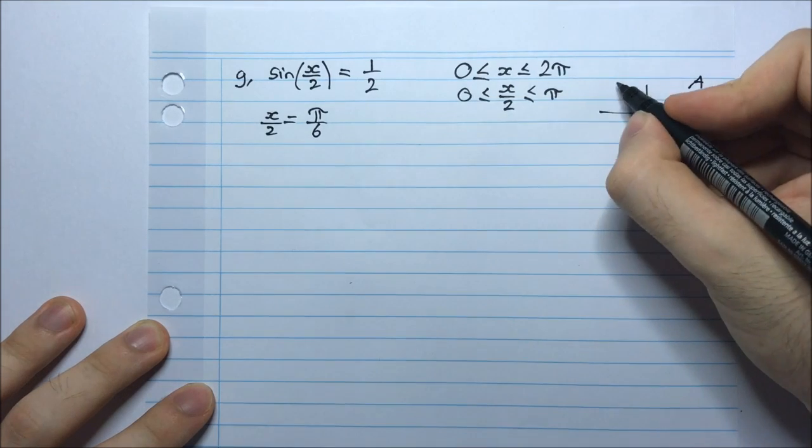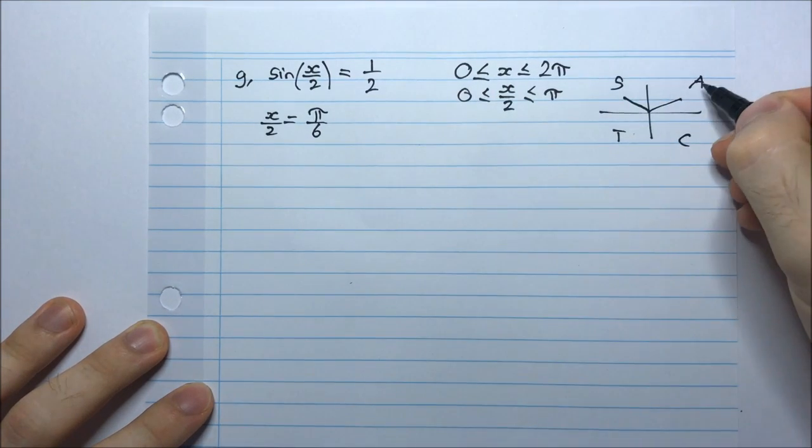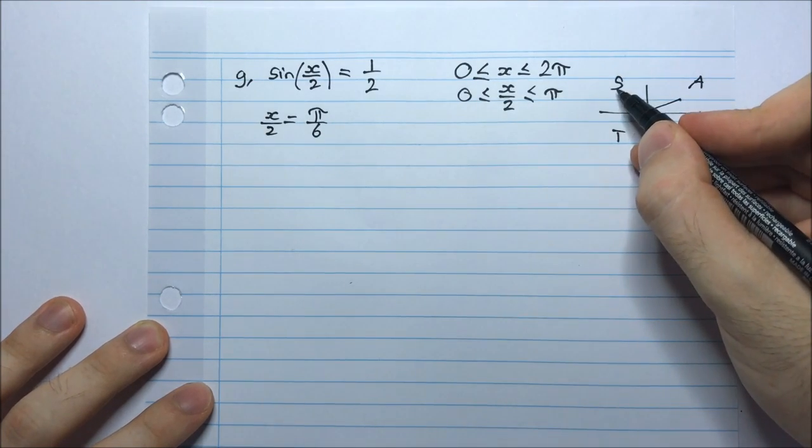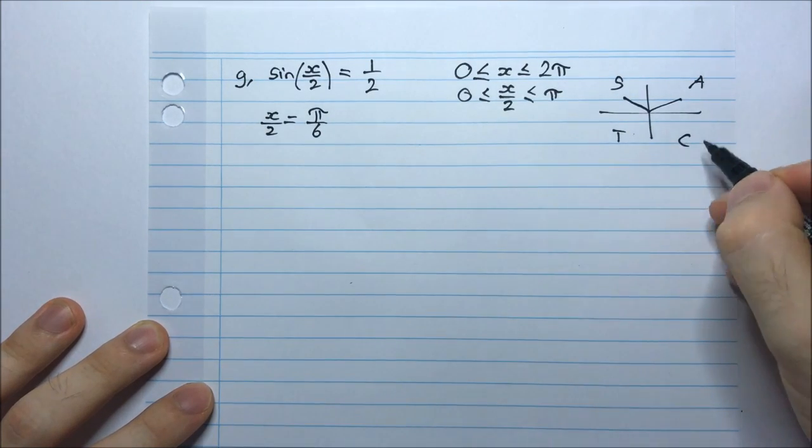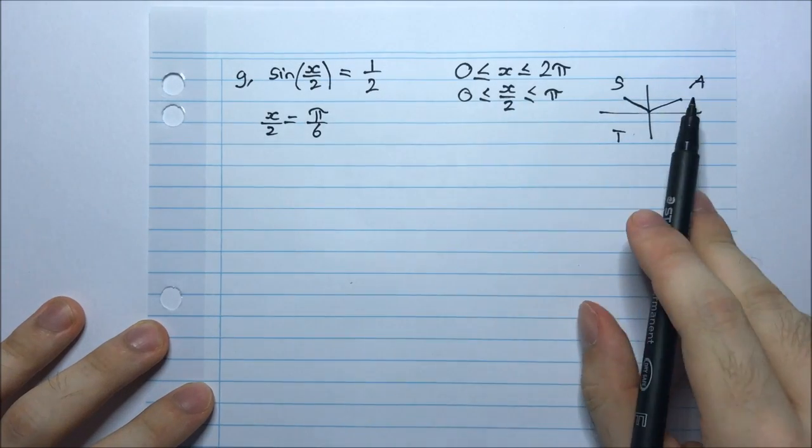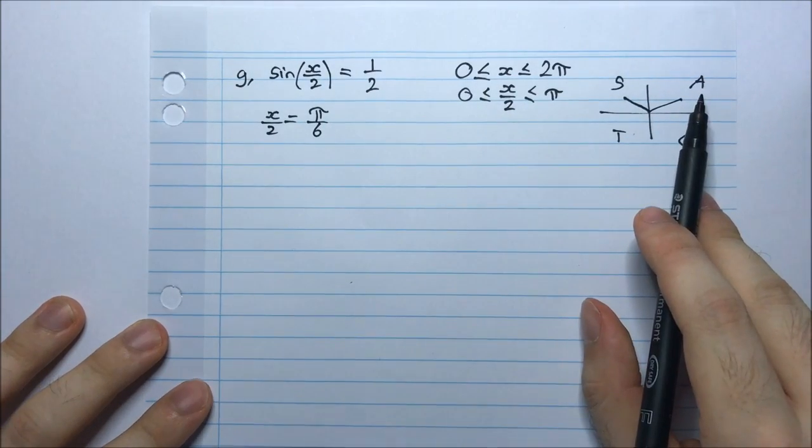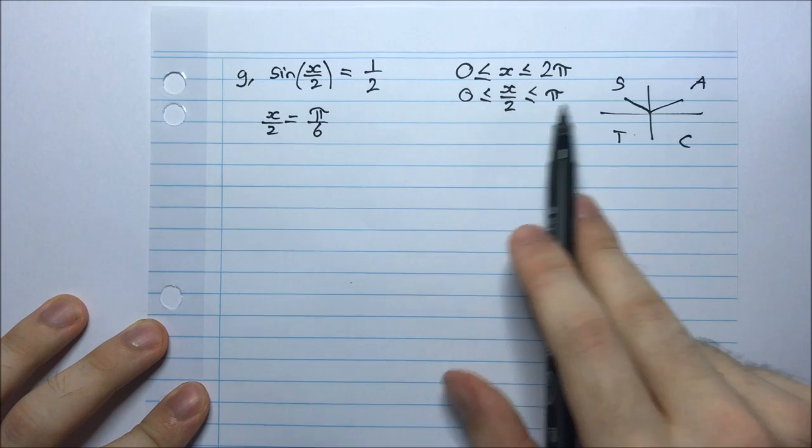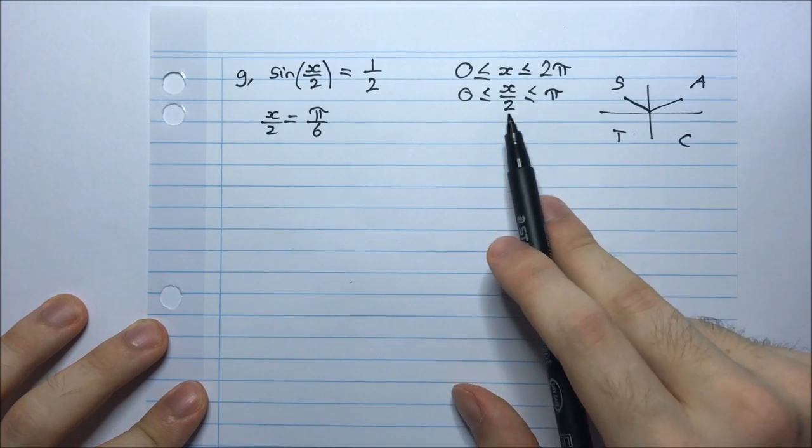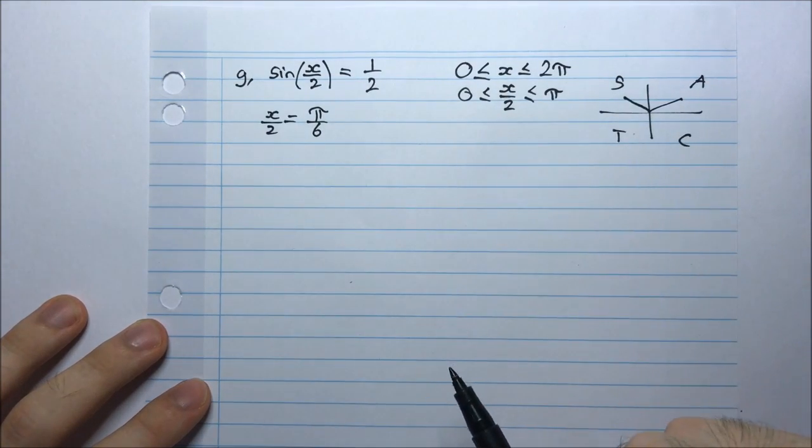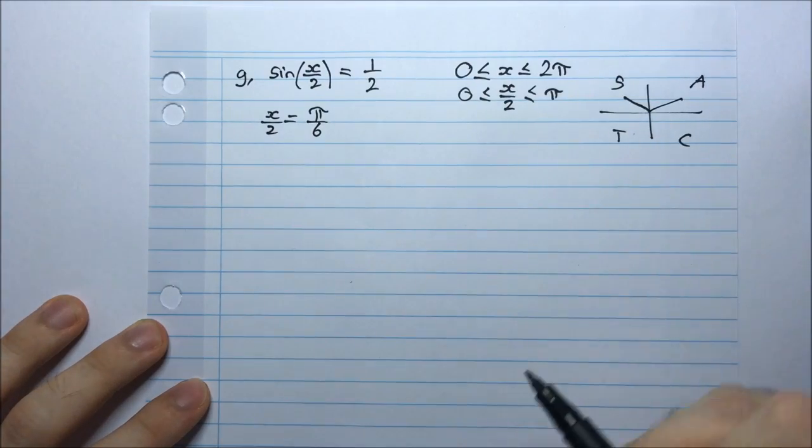Well, 1/2 is positive, and we know sin is positive in the first and the second quadrants. Remember the mnemonic, all stations to central. Everything or all functions are positive here. Only sin is positive here. Only tan, only cos. So we're looking at sin, so we're looking in the first and the second quadrants.